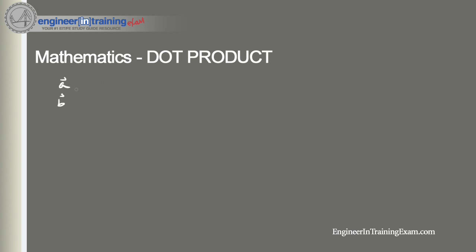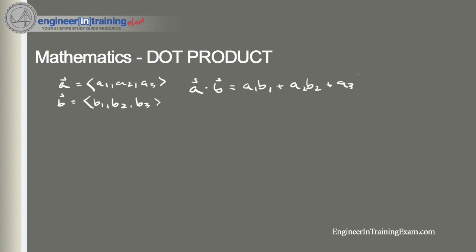Assuming we have two vectors, a and b, where vector a has components a1, a2, and a3, and vector b has components b1, b2, and b3 — the dot product, notated as a dot b, is equal to a1 times b1, plus a2 times b2, plus a3 times b3.